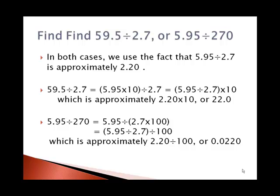In the same way, 5.95 divided by 270 is actually 5.95 divided by the product 2.7 times 100, which is the same as 5.95 divided by 2.7, now divided by 100, and ends up to be 0.0220.